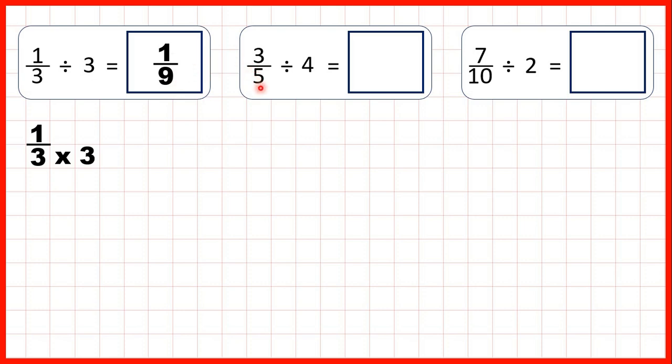Now we have 3 fifths divided by 4. We write out the fraction and then rather than dividing, we multiply the denominator by the number that we're dividing by. So our numerator stays the same and 5 times 4 is 20, so our answer is 3 over 20.